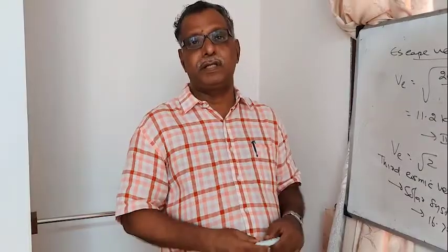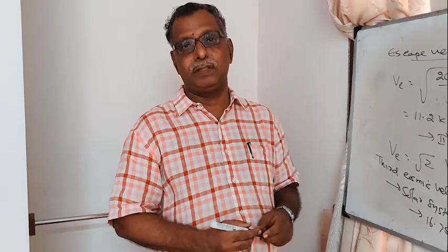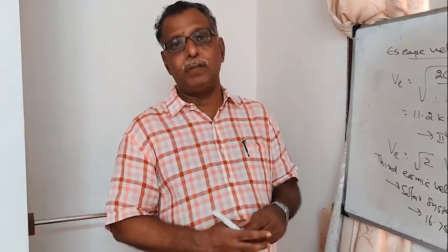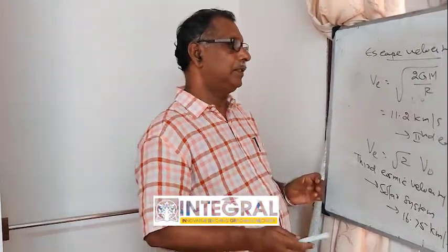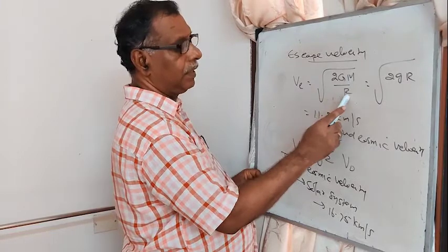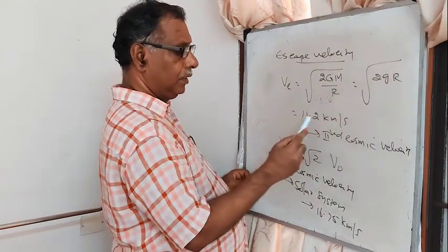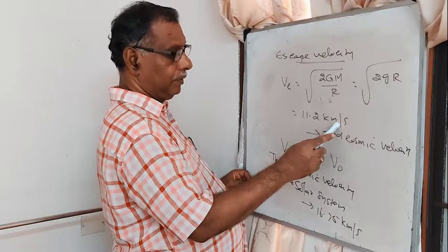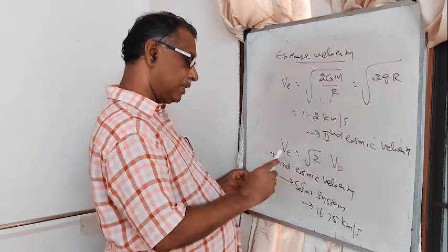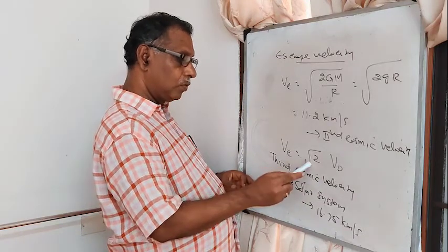Escape velocity is the minimum velocity with which a body must be projected so that it goes beyond the gravitational pull of the earth. It is given by Ve = √(2·G·M / R). Since G·M = g·R², this gives Ve = √(2·g·R), with a value of about 11.2 km/s. This is called the Second Cosmic Velocity, and Ve = √2 × Vo.